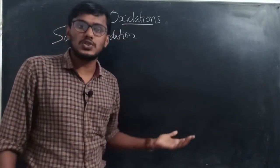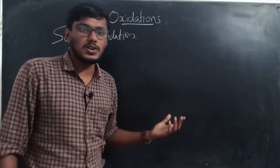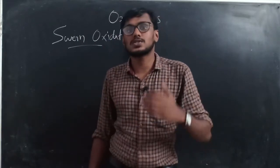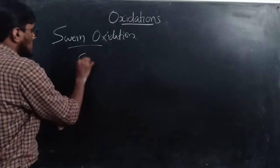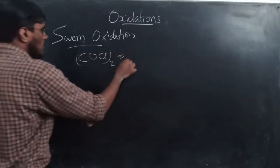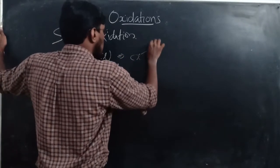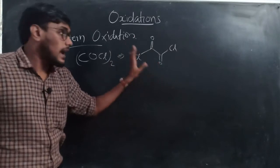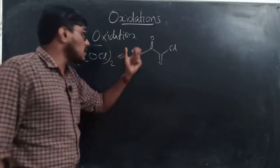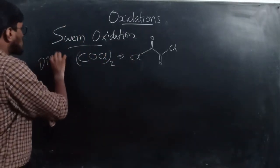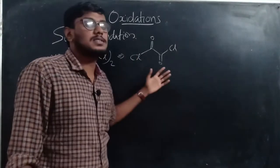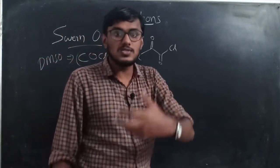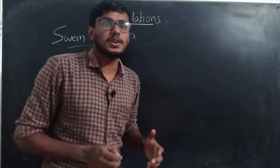Swern oxidation is the oxidation of alcohols into carbonyl compounds: primary alcohols are oxidized to aldehydes and secondary alcohols to ketones. The activating molecule in this reaction is oxalyl chloride (COCl₂). Oxalyl chloride acts as the activating reagent — DMSO is first activated by oxalyl chloride, then forms an intermediate alkoxy sulfonium ion, which on reaction with alcohol gives the carbonyl compound as the product.